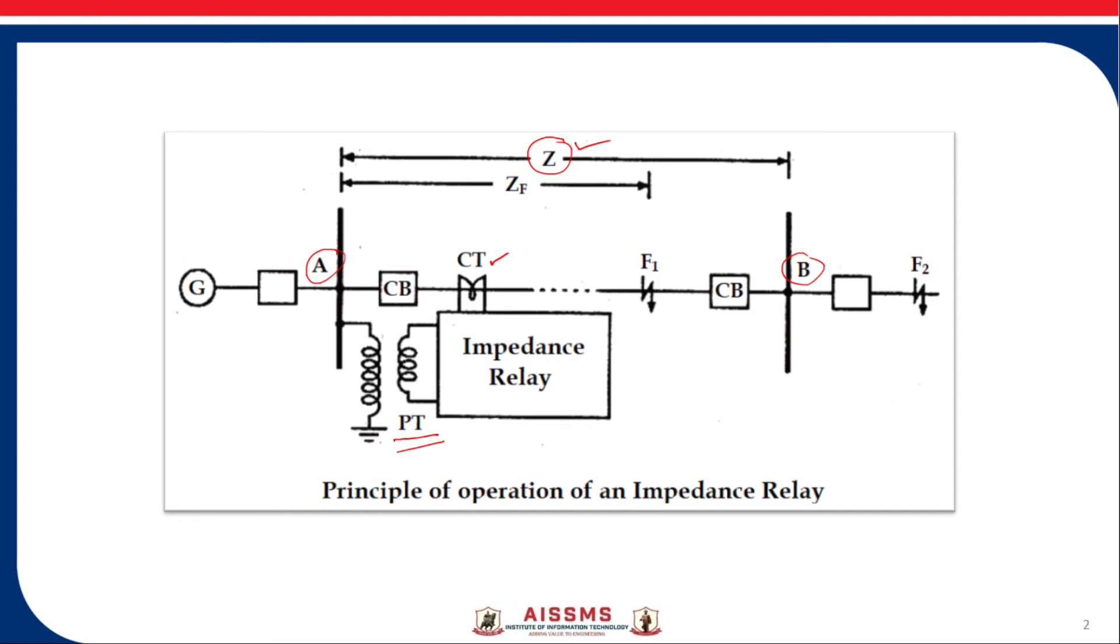Suppose the fault occurs at point F1 in the protected zone. The impedance ZF between the point F1 in the protected zone and the point of fault will be ZF. If that ZF is less than Z then relay will operate.